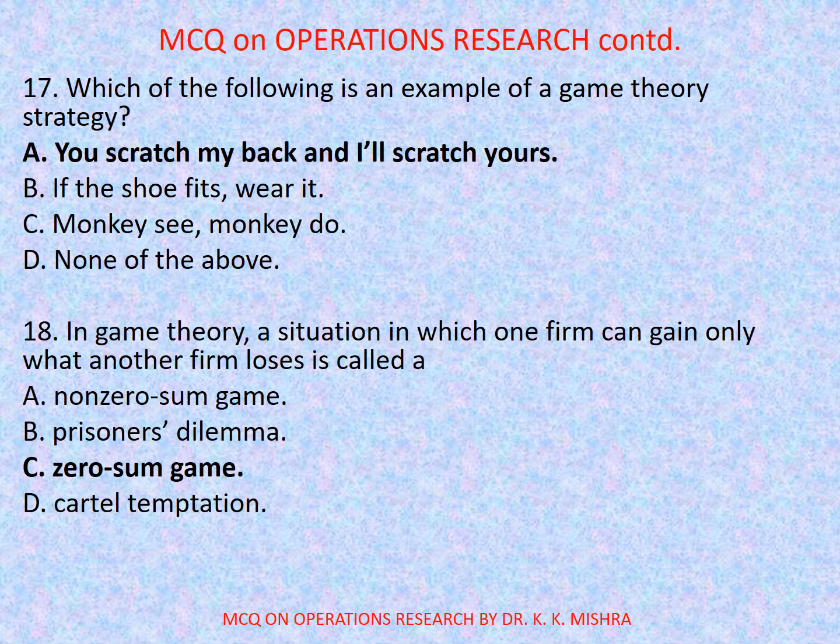Question number 18: In game theory, a situation in which one firm can gain only what another firm loses is called a — options are: a) non-zero-sum game, b) prisoner's dilemma, c) zero-sum game, d) cartel temptation. Correct option is c) zero-sum game.